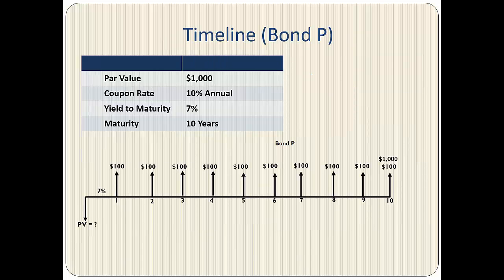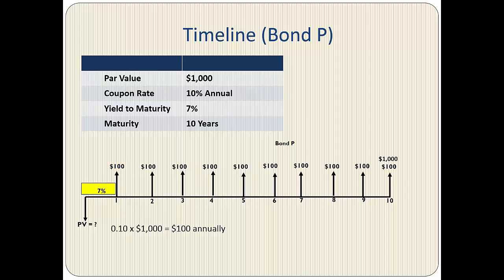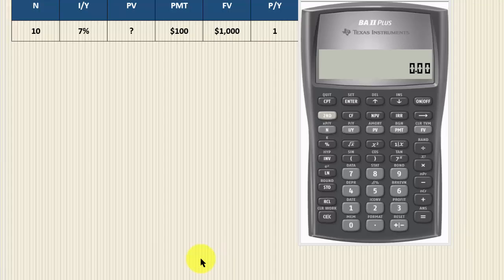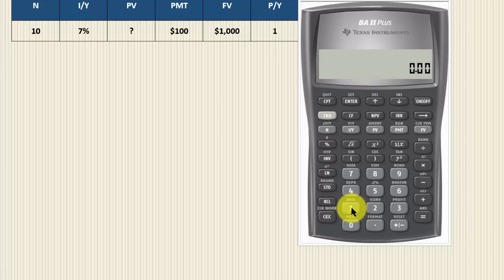Here is the timeline for Bond P. The par value is $1,000 and the coupon payment is 10% of $1,000, which equals $100 annually. To find the current price, we discount the cash flows at 7%, which is the yield to maturity, and Bond P matures in 10 years. We calculate the price using a financial calculator, starting by clearing the time value of money worksheet with 2nd Clear TVM. Then we set N equals 10.